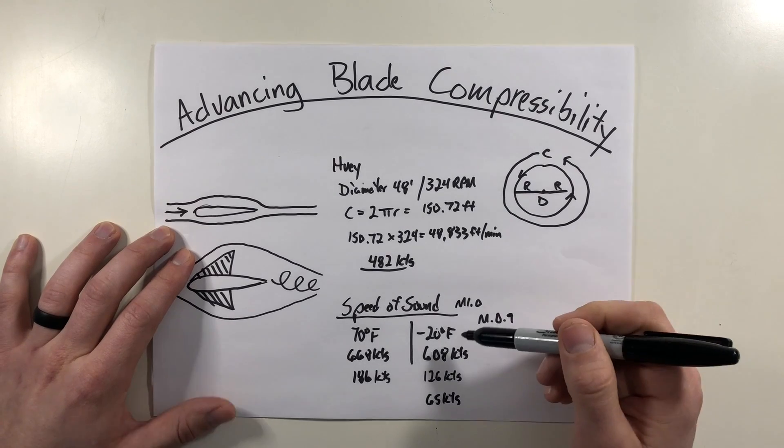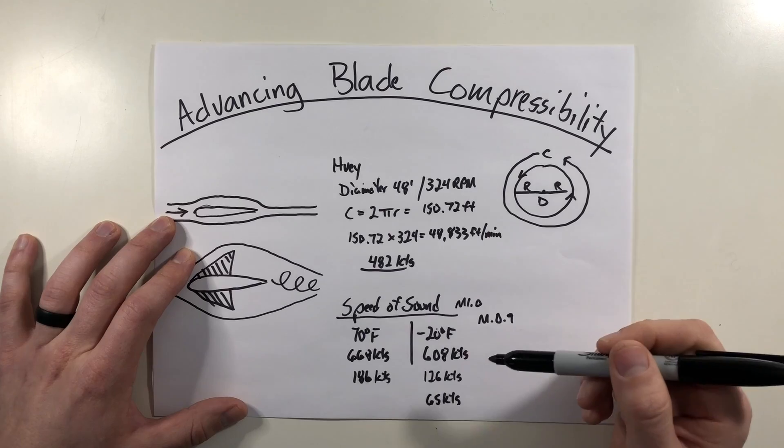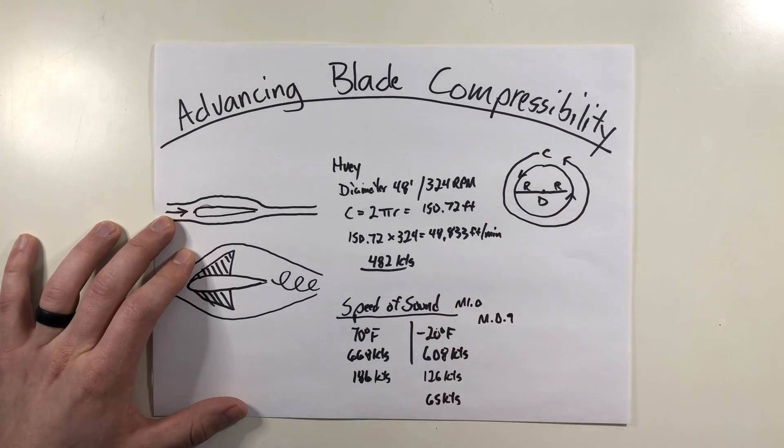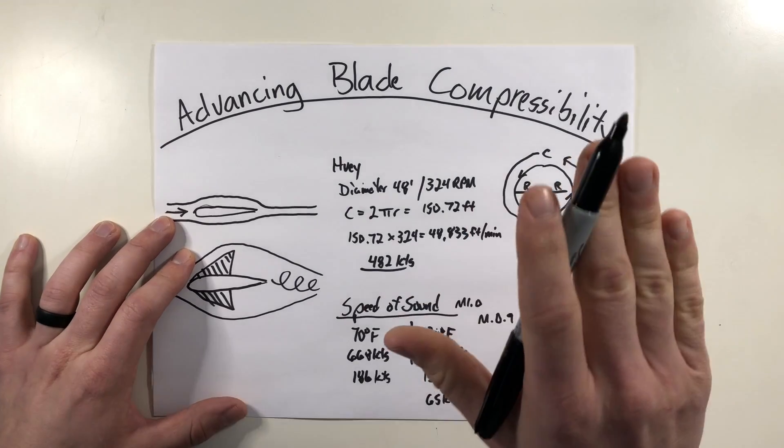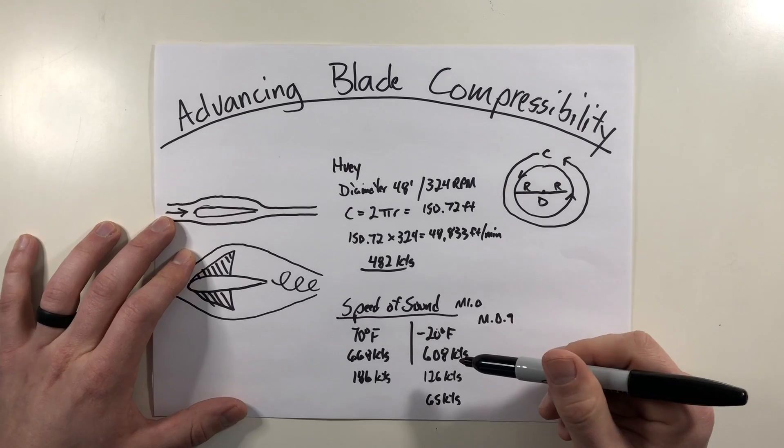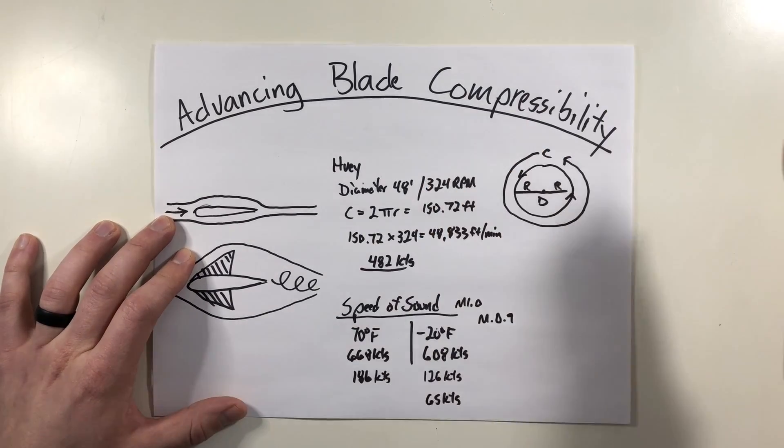So why is this important? Well, just like retreating blade stall, you're entering into an area where half of your rotor disc can't produce lift. In retreating blade stall, you notice the aircraft as its retreating blade would stall, it would pitch up and roll to the left or the side of the stall. But in advancing blade compressibility, you're going to notice the nose is going to want to tuck and potentially roll to the right.